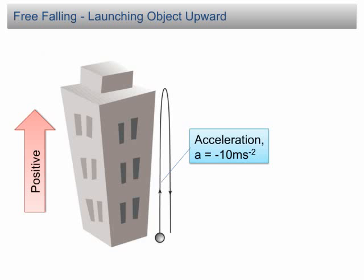When the object is moving downward, the velocity of the object increases, but the object is moving in the opposite direction. Therefore, the acceleration is still negative 10 meters per second per second. When the object is moving upward, the acceleration is negative because the object is decelerating. When the object is moving downward, the acceleration is still negative because the object moves in the opposite direction. At the maximum point, the object stops for a while, then changes direction and moves downward. Hence, the velocity of the object is zero, and the displacement of the object is equal to the height of the building. The time taken for the object to move to the maximum point is equal to the time taken for the object to move from the maximum point back to its initial position.